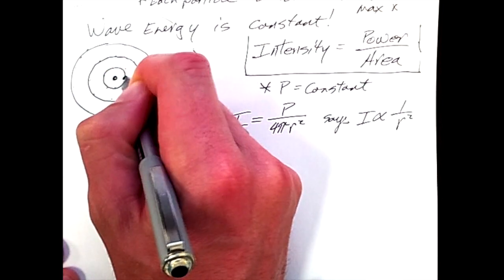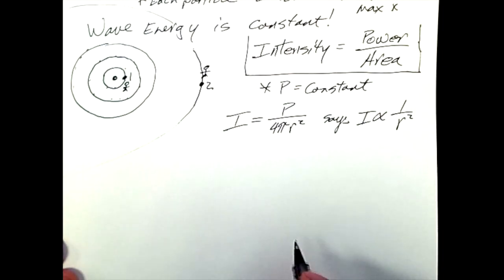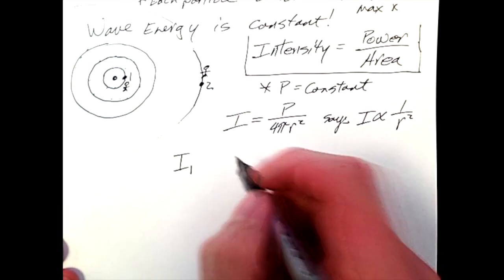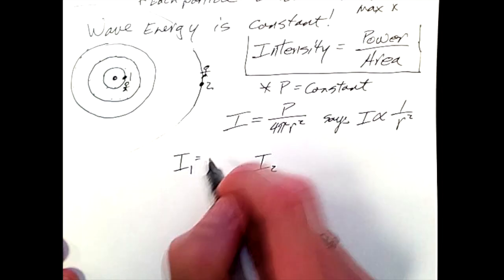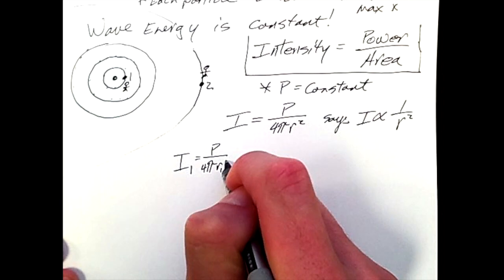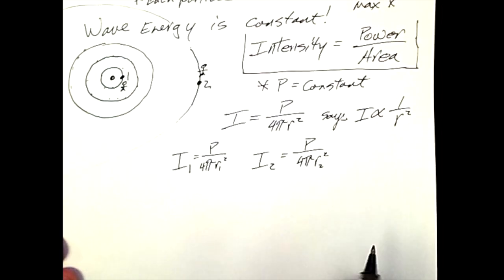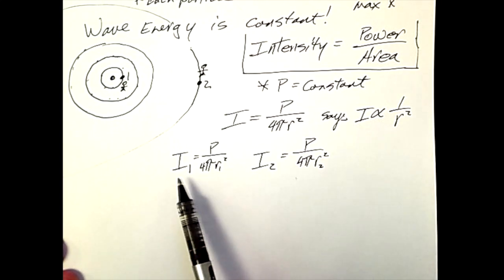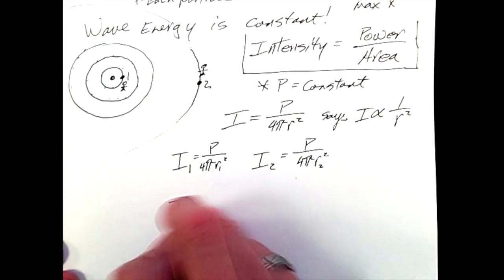And so what we'll be doing is comparing locations like location 1 and location 2 in this diagram. And so in order to do that, we think of it simply as two intensities. Intensity 1 would be the value of the intensity at point 1, and intensity 2 would be the value of the intensity at point 2. But again, each one of these is simply equal to P, which is a constant, over 4 pi times the radius squared. Now again, the constants hold through the system, so what we can do is simply compare position 2 to position 1, simply by dividing.